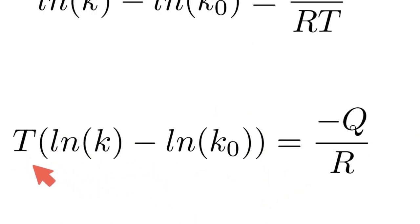And all we need to do now to get T all by itself is divide both sides by this term right here. So we're going to divide both sides by this.